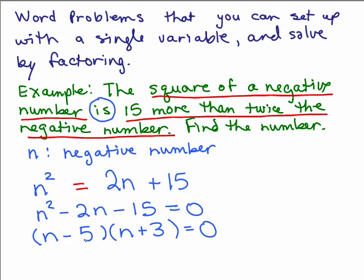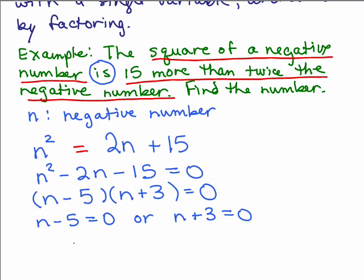Then what do we do? We set each factor equal to zero. So n minus 5 equals zero, or n plus 3 equals zero. That would mean n is 5, or n is negative 3.